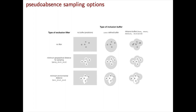We have written several options regarding pseudo-absence sampling, which is important because depending on how you sample pseudo-absences, your performance statistics may vary. Models may appear to perform abnormally well because the area of pseudo-absence sampling was too large. There is also a discussion in the literature about how close or far pseudo-absences should be sampled. We decided to implement two kinds of filters: inclusion buffers and exclusion filters.